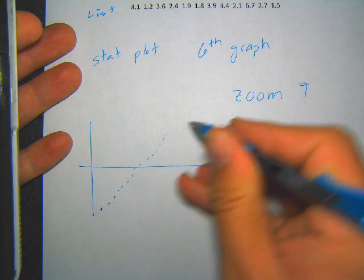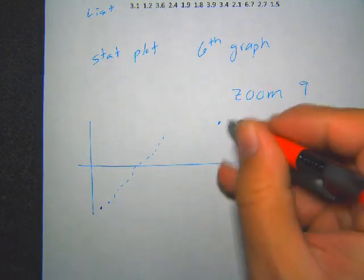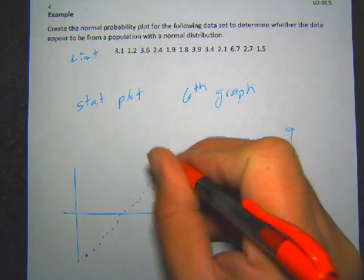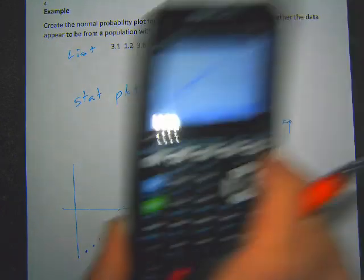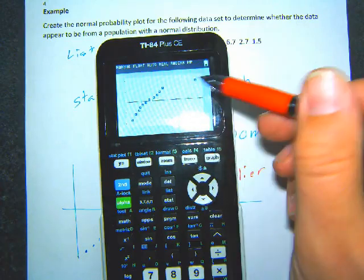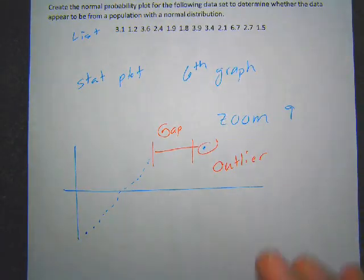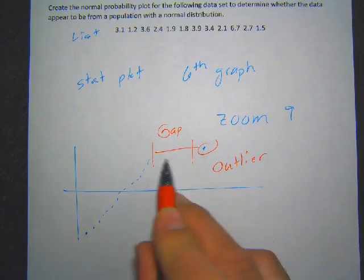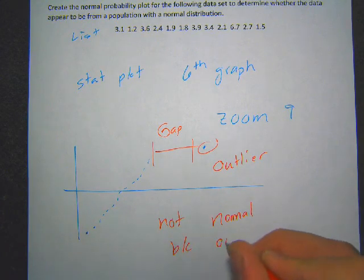Once you zoom, you get the graph. It looks mostly straight — mostly the data is grouped together — but then there's one value way out here, far away from the rest. There's a big gap between that value and the rest of the data. That gap tells us that value is probably an outlier. Whenever you have a normal quantile plot where most values are close together but then one has a big gap, that's an outlier. And if it has an outlier, it's not normal.